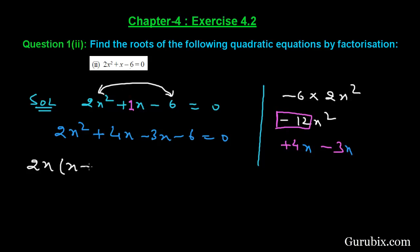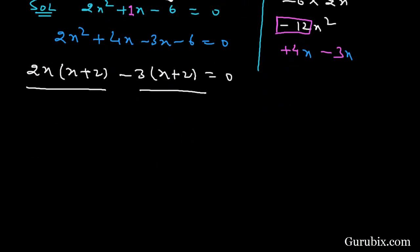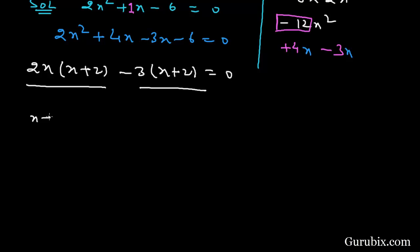We shall take common 2x from the first two terms, then we have x + 2 in the bracket. We shall take -3 common here, then it will be x + 2 in the bracket. So now these are the two terms, and from these two terms we shall take common x + 2.